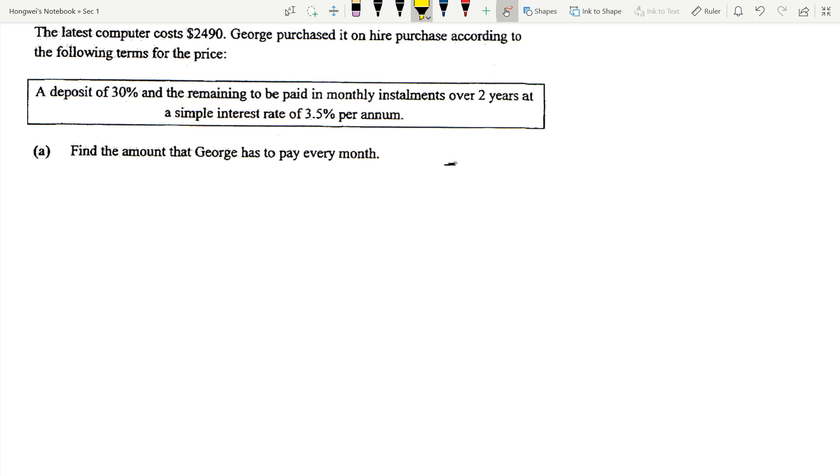Hire purchase means to do it by installment – paying monthly. For how long? It depends on the question. Let me remind you on the concept of hire purchase. So today there's this computer, maybe a Sony laptop, that costs $2,490.